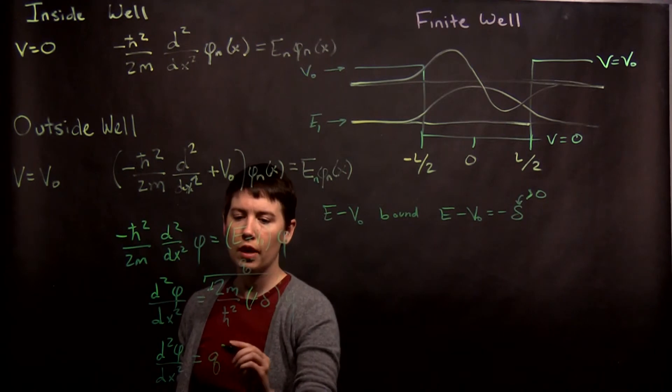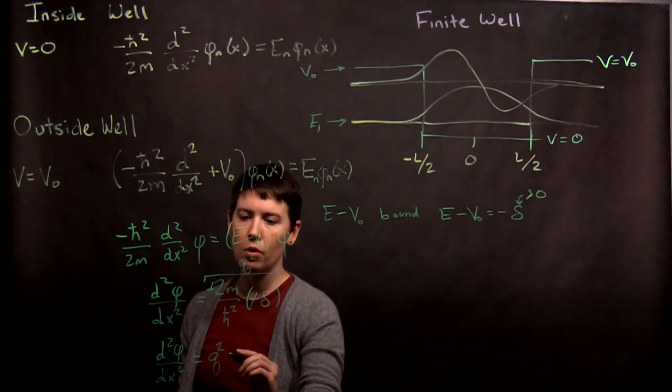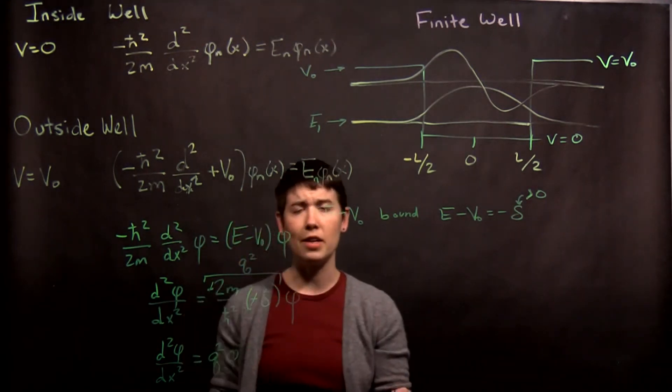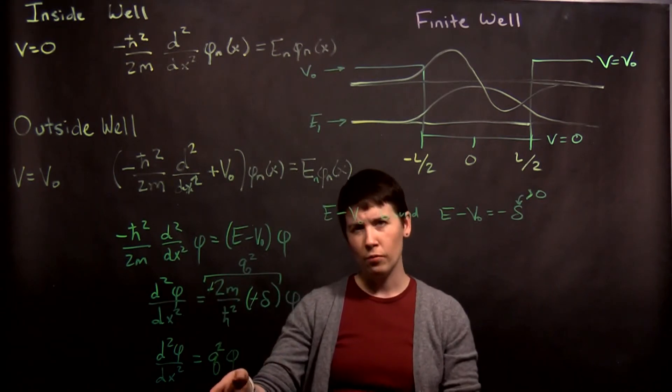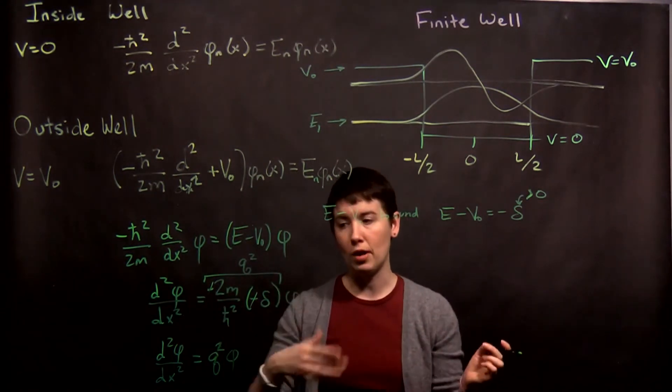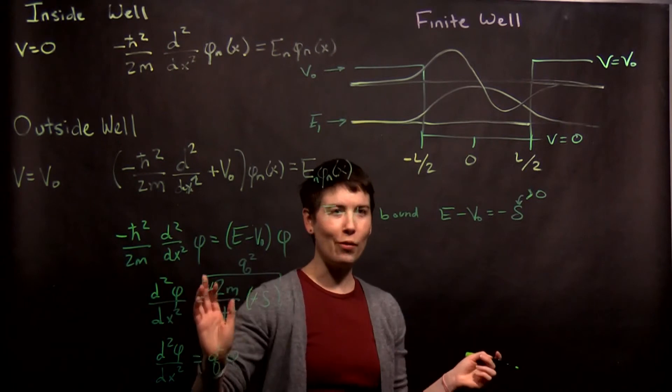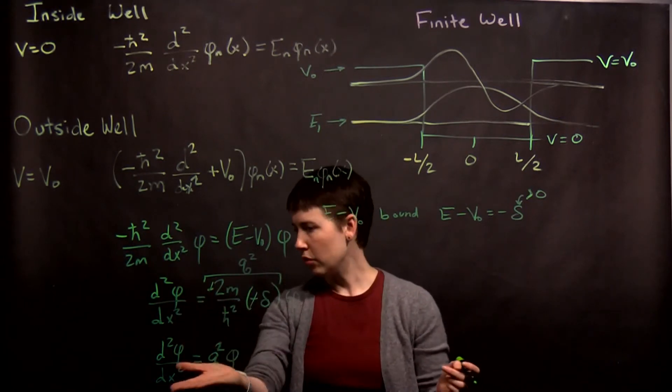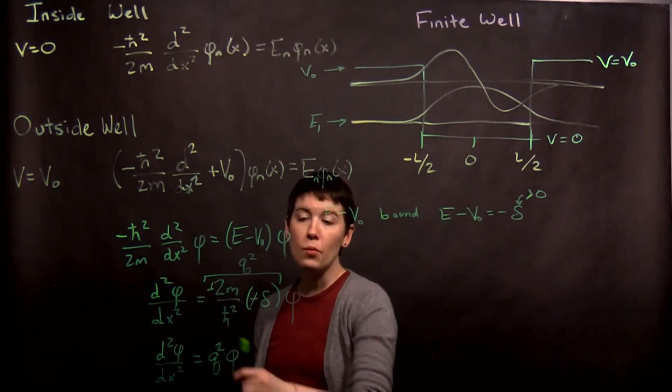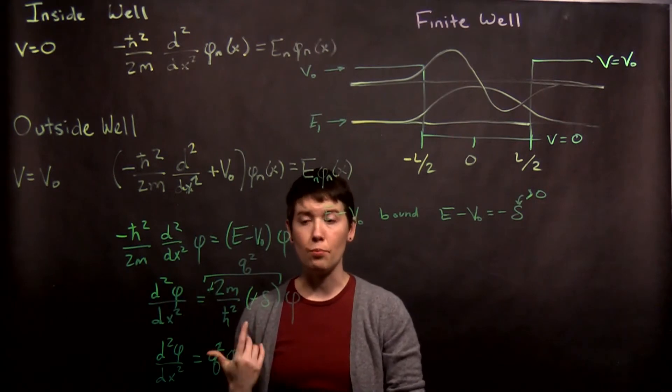So I rewrite this as q squared, and you can say, well, how do I know it should be q squared and not q? You can call it q, just the math, later you'll have a square root. I happen to know where we're going, so I write it this way. So, now we have our differential equation in a fairly simple form.